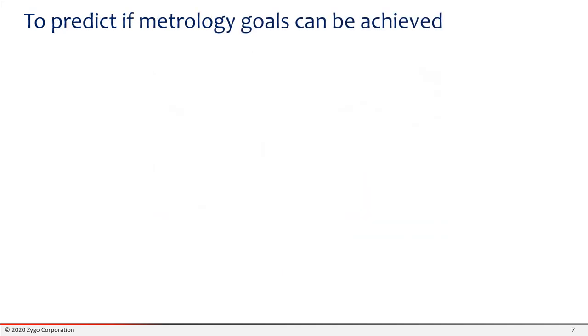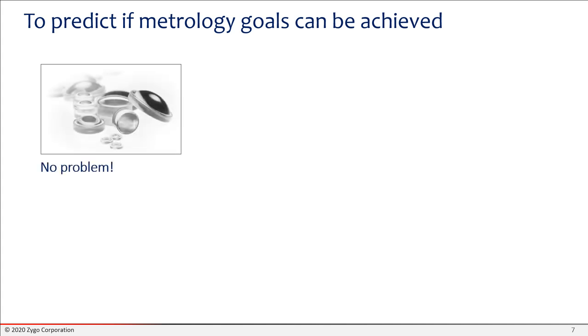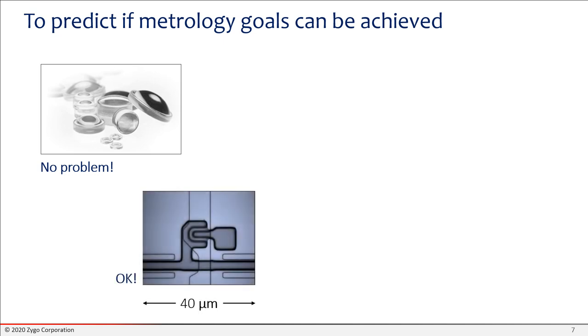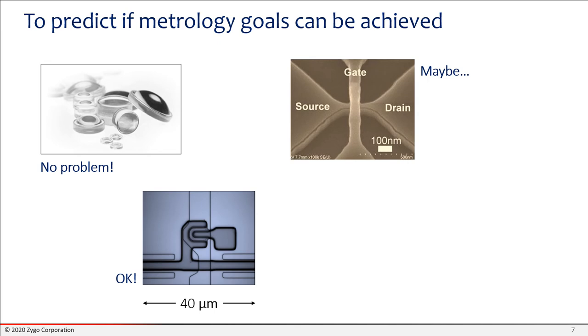A good reason to have an interferometer model is to be able to predict if metrology goals can be achieved before you even try and make a measurement. For example, we expect that little lenses like this, we should be able to measure those no problem. For something a little smaller, like this thin film transistor on a display, that's only 40 microns wide for the field of view, but you could measure that in an interference microscope. What about this transistor on a silicon wafer? This is a little bit of older transistor, but still pretty small. You see the 100 nanometer scale there. A model could tell you whether or not you're within range or what kind of numerical aperture or wavelength you would need.